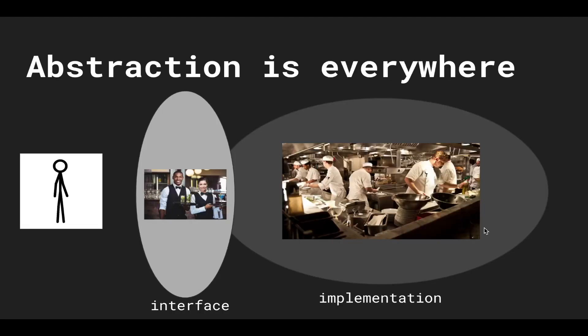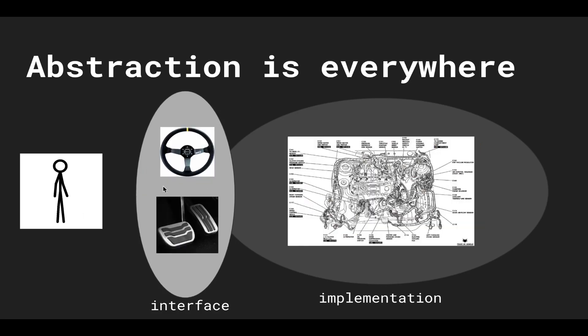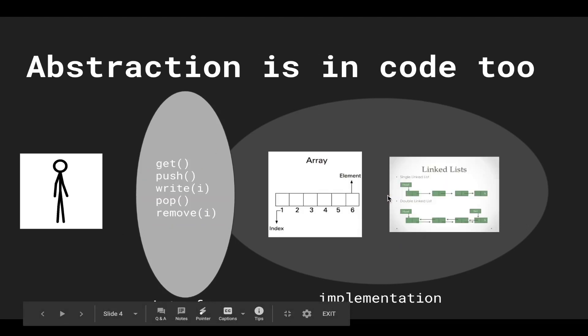So just like the restaurant, as in the waiters hide the complexity of the kitchen, and just like driving a car where the steering wheel and pedals hide the complexity of the engine, an abstract data type hides the complexity of an array and linked list and in general data structures.